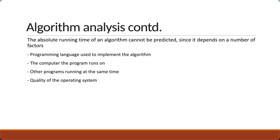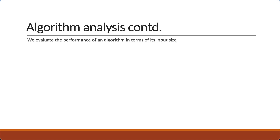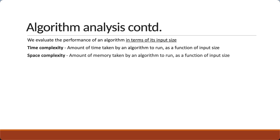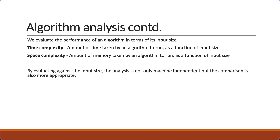Keeping these points in mind, we evaluate the performance of an algorithm in terms of its input size. The evaluation is of two types. First, we have time complexity, which is the amount of time taken by an algorithm to run as a function of input size. Second, we have space complexity, which is the amount of memory taken by an algorithm to run as a function of input size. By evaluating against the input size, the analysis is not only machine independent, but the comparison is also more appropriate.